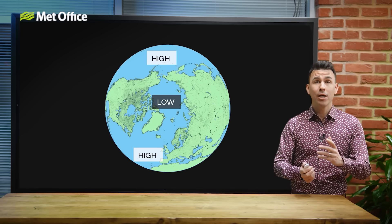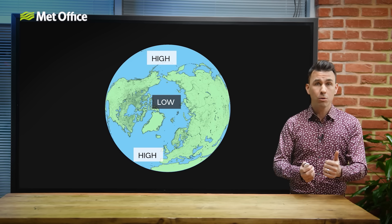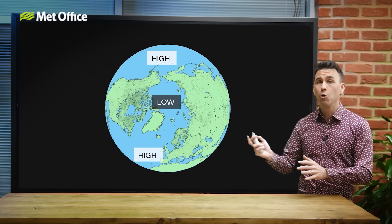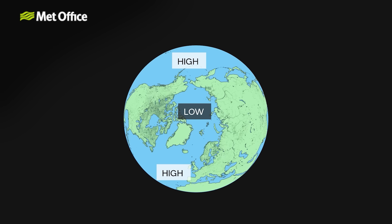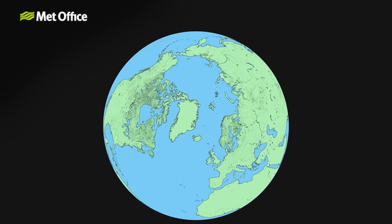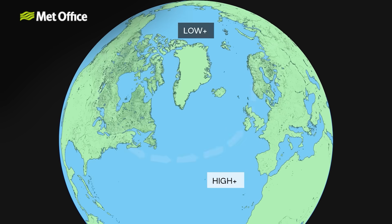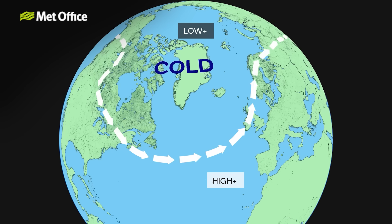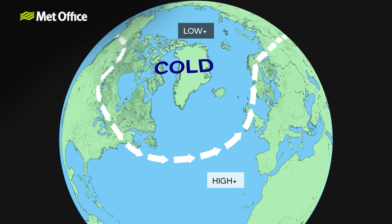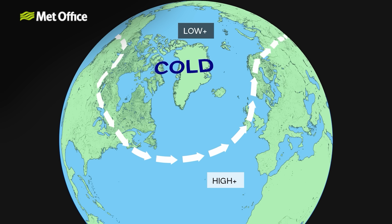When pressure is even lower than normal towards the North Pole, and/or higher than normal further south, the AO index is described as positive. When the AO swings positive, the jet stream strengthens and shifts north, trapping cold air near the pole. Europe and North America get wind, rain and above-average temperatures.